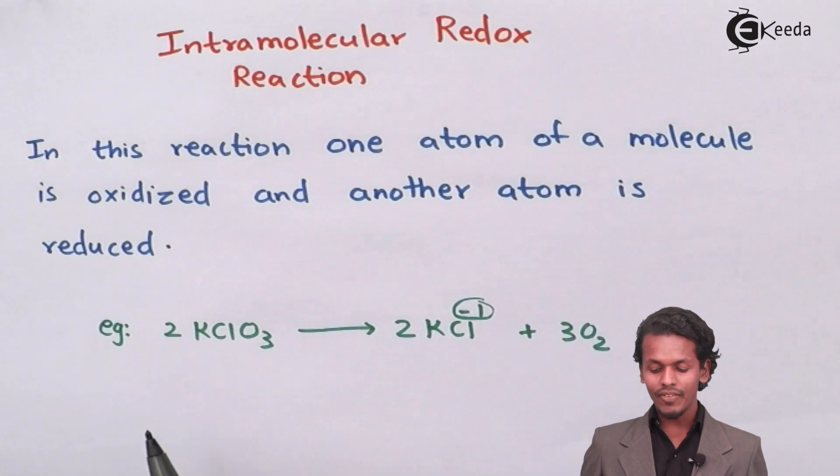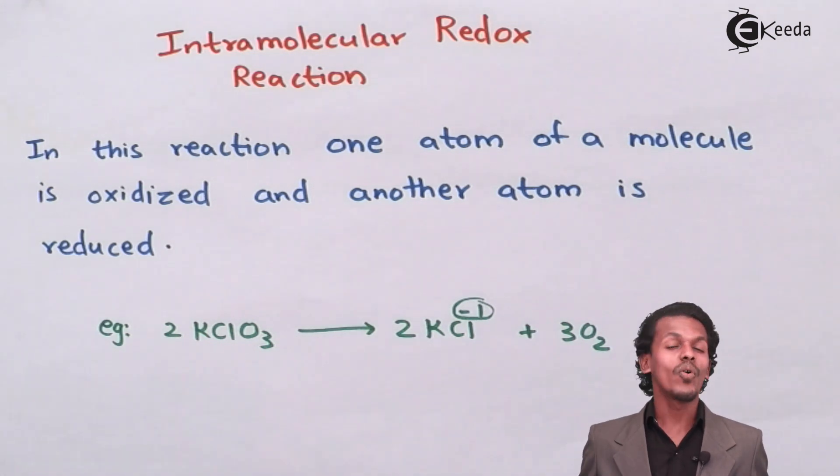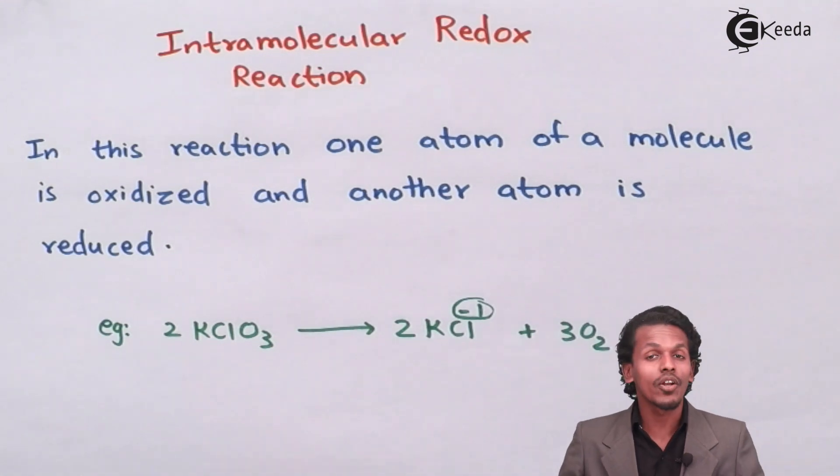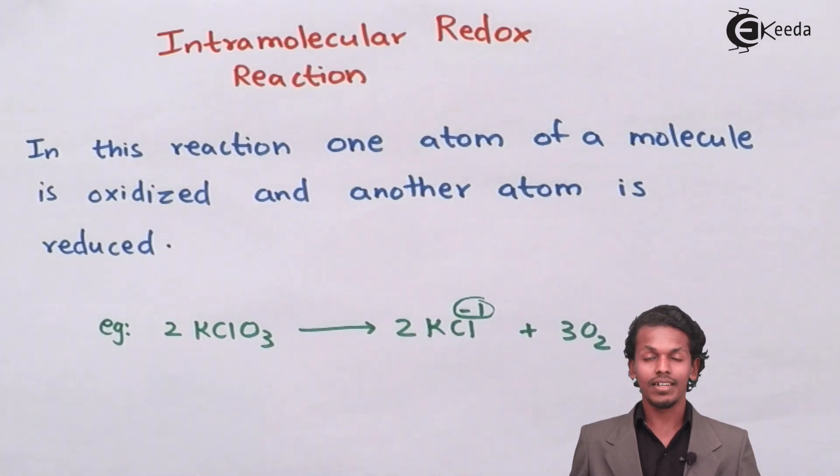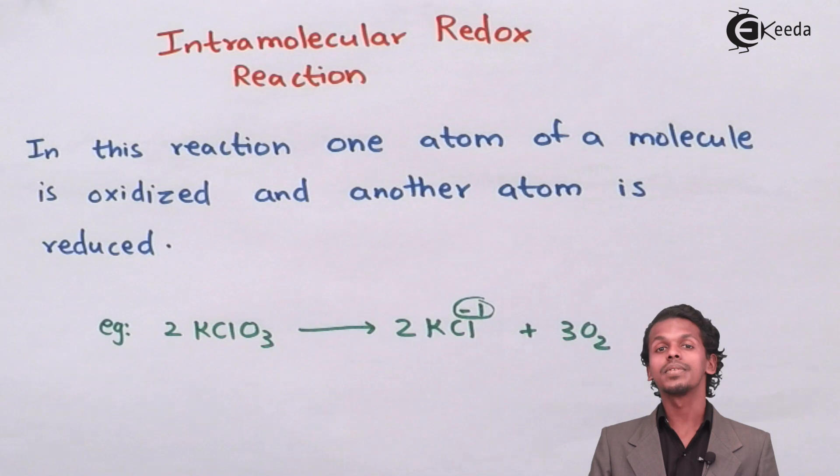For that I have given an example. This is a reaction in which one reactant gives two products. This kind of reaction which forms two oxidation states of different atoms is known as a decomposition reaction that we have already studied.